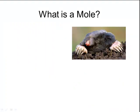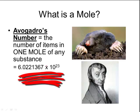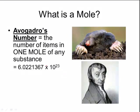The number we use is called Avogadro's number. Amadeo Avogadro was an Italian chemist who determined that the number of items in one mole of any substance is 6.02 × 10²³. That number represents the number of items in one mole of any substance.